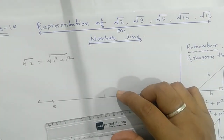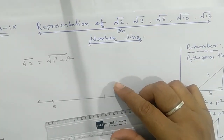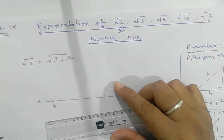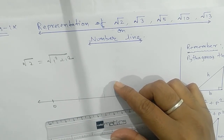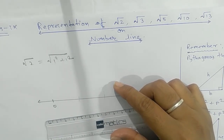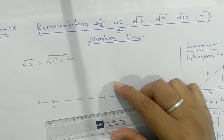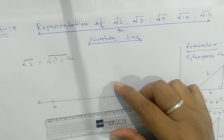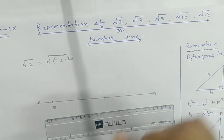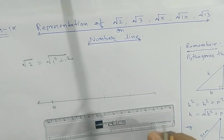Today's topic is representation of root 2, root 3, root 5, root 10, and root 13 on the number line. We'll start with root 2 — to represent root 2 on the number line, we have to draw a line with the help of a ruler.